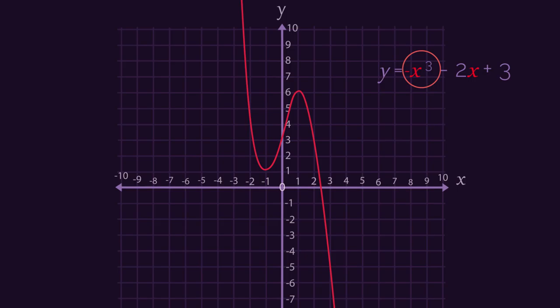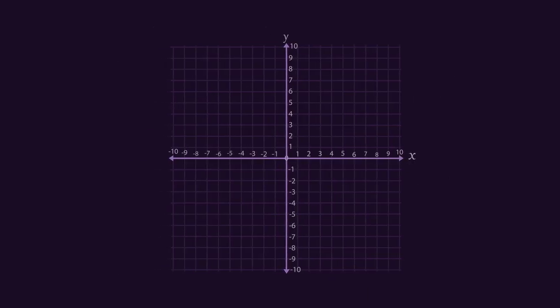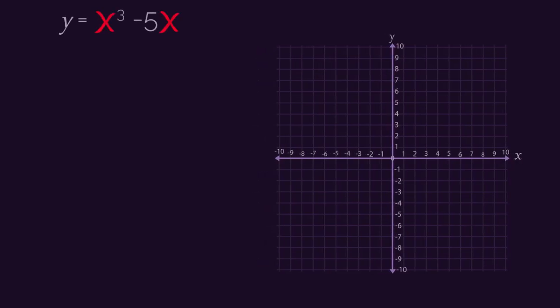So let's look at an example. We want to plot y equals x cubed minus 5x on our graph. It is a positive x cubed, so we know we're expecting something like this.